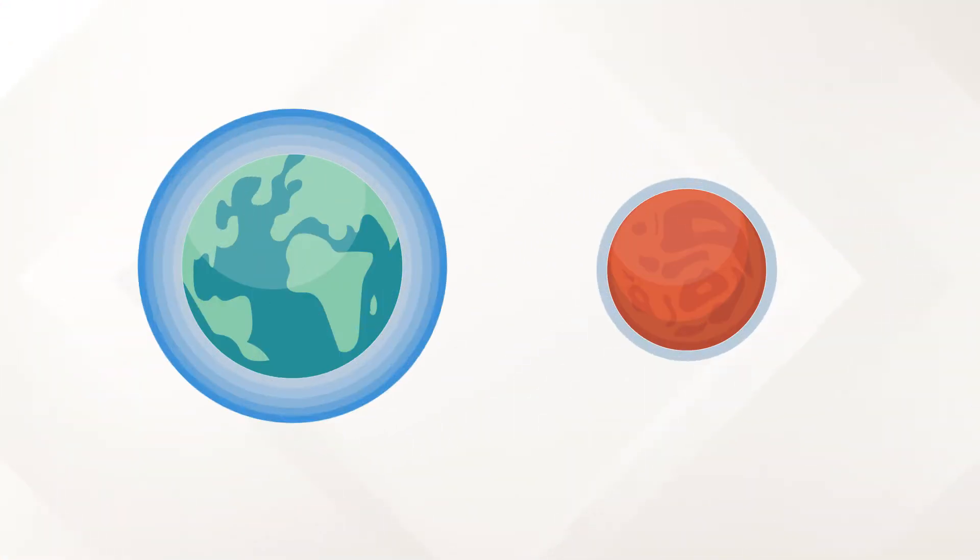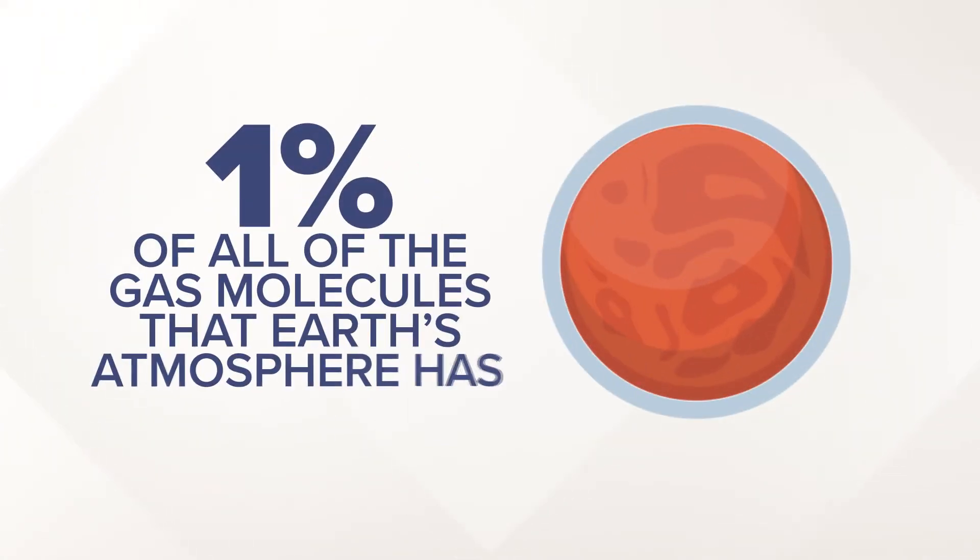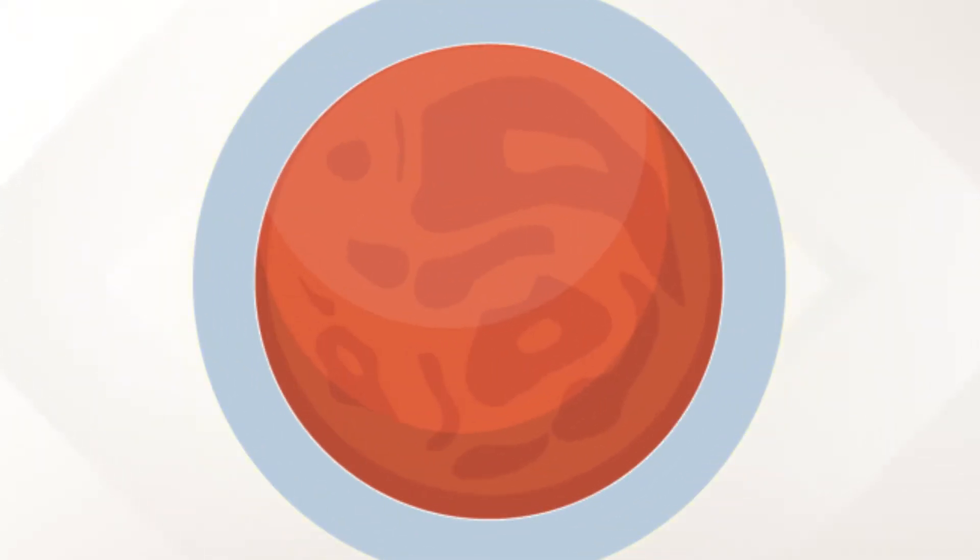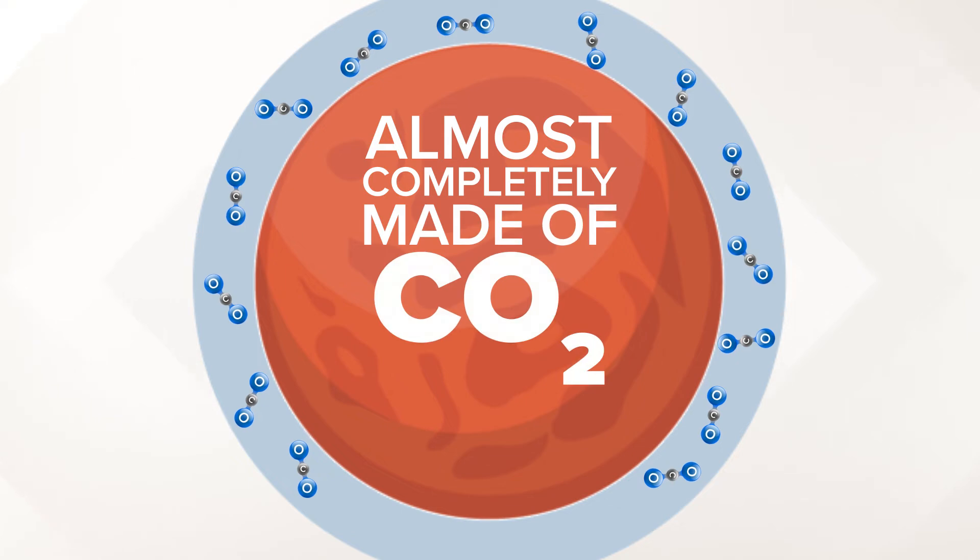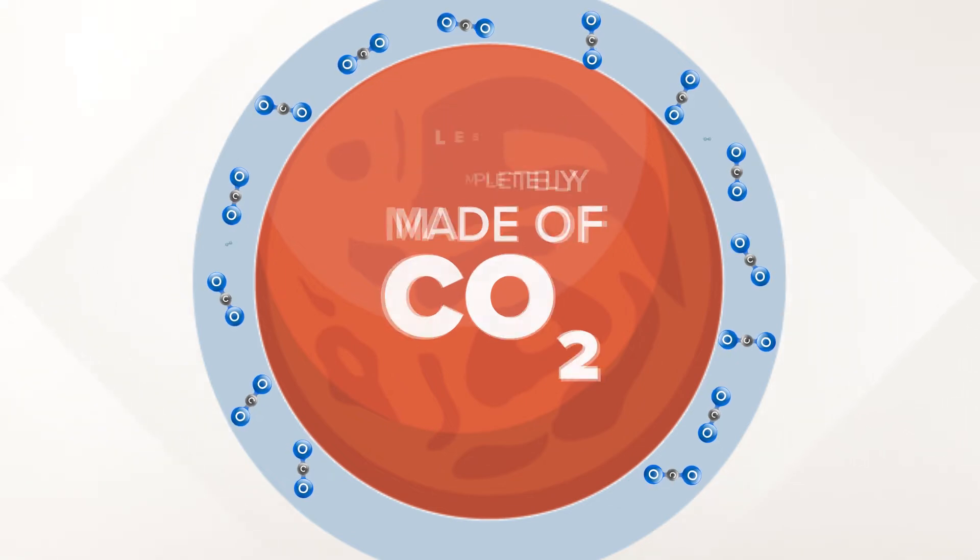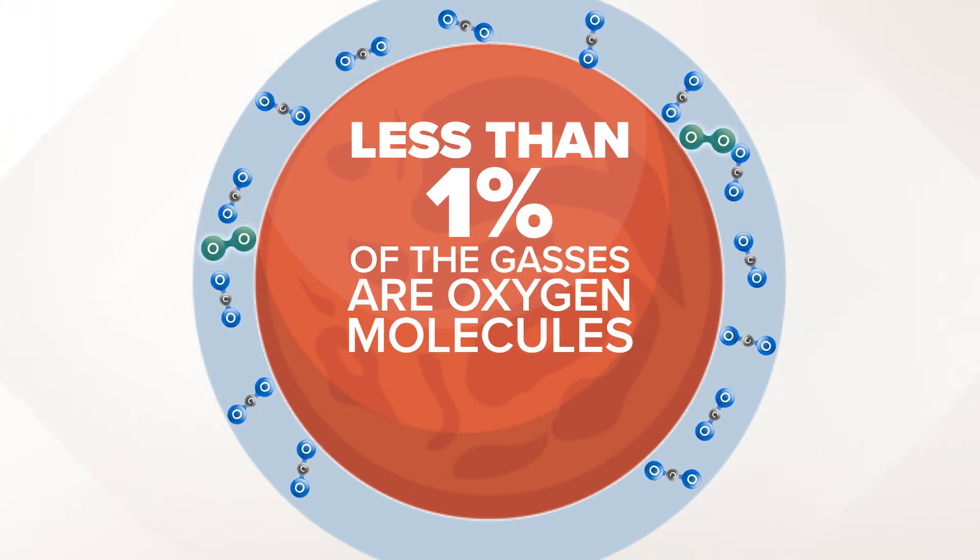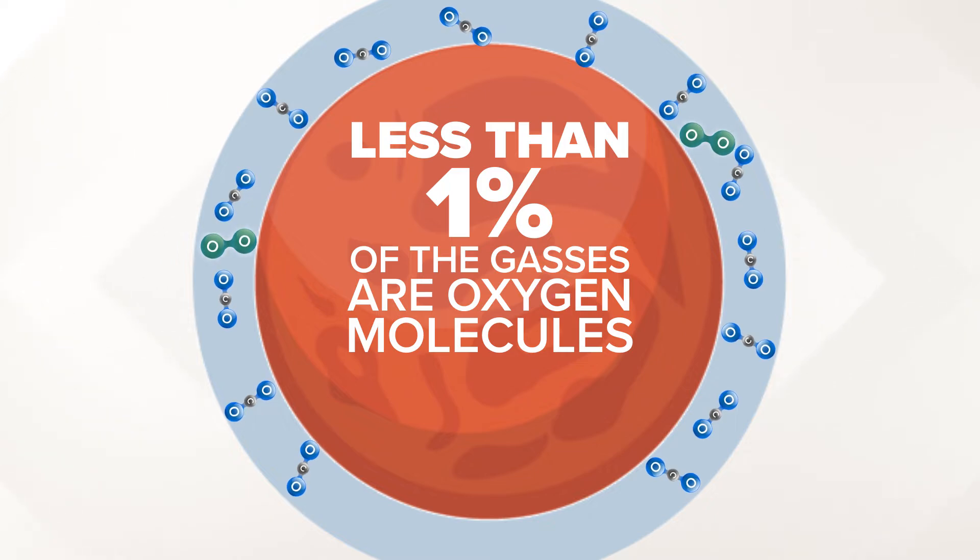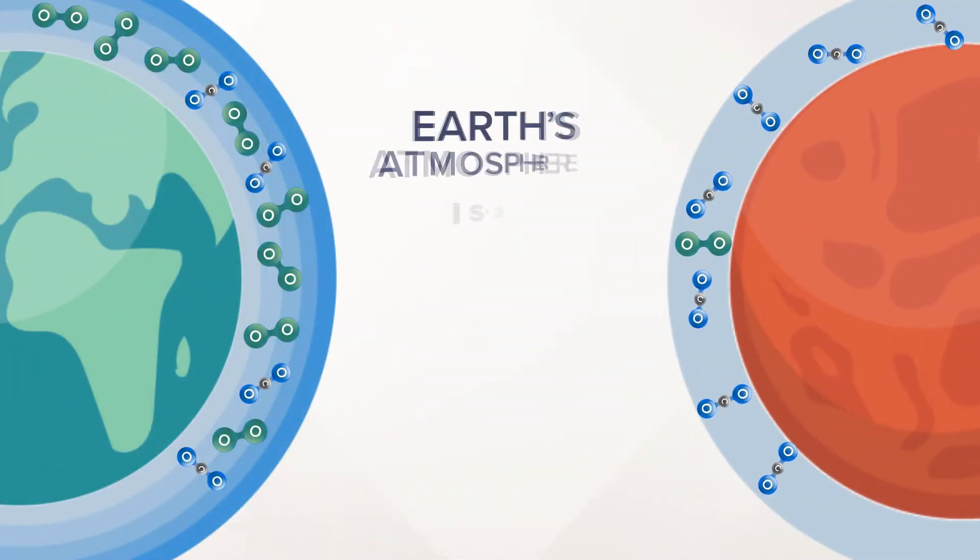For starters, it's a lot thinner than Earth's atmosphere. By weight, Mars's atmosphere has 1% of all of the gas molecules that Earth's atmosphere has. And what little atmosphere there is, is almost completely made of CO2. Less than 1% of the gases on the red planet are oxygen molecules. For comparison, Earth's atmosphere is 21% oxygen.